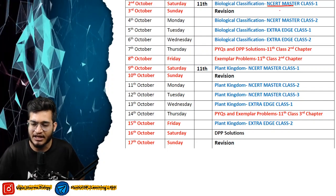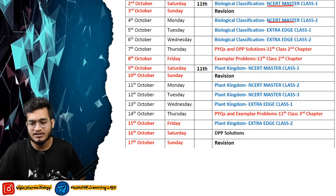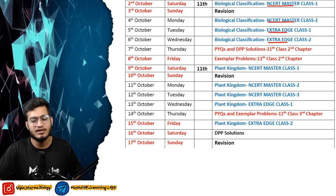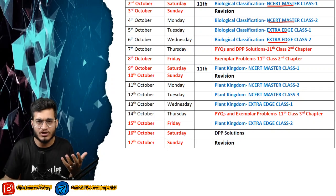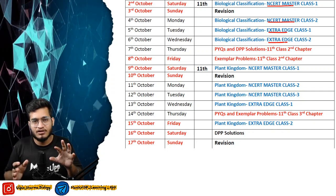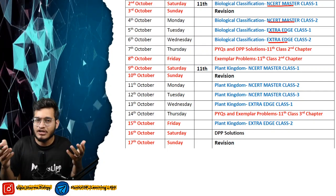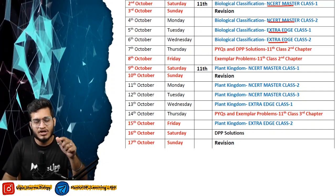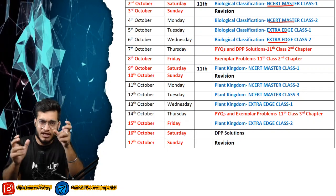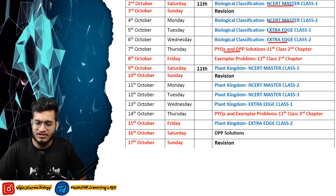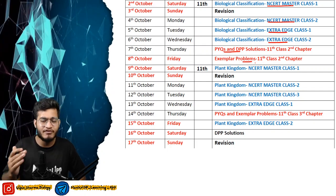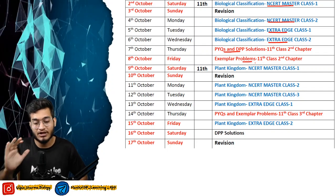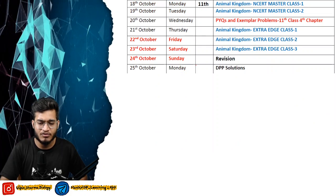Biological classification — NCRT master class will be done first, then since it's a huge chapter, NCRT master class will be split into 2 parts. Then extra edge — 2 lectures. About 2 days, with 15-20 minute videos, 7-8 videos uploaded over 2 days. That's why I'm putting in my efforts in such a way that you can clearly cover a topic — PYQ, DPP solutions, exemplar problems, everything. Similarly for 11th: Plant Kingdom, then Animal Kingdom.